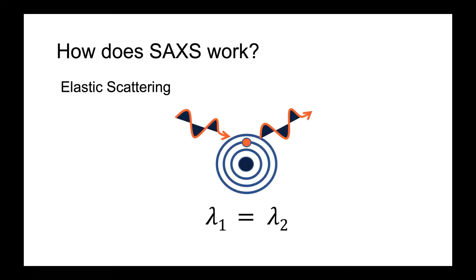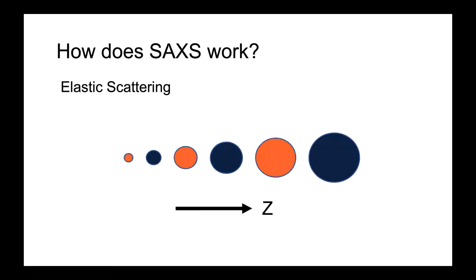Since electrons act as the scattering centers, increasing the number of electrons increases the scattering, maximizing your signal. As a rule of thumb, samples comprised of heavier elements tend to have brighter intensities, but that isn't always the case — it's just a general rule of thumb to go by.